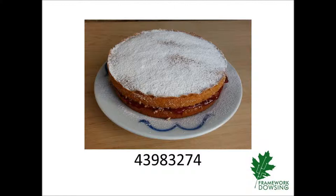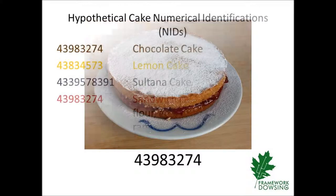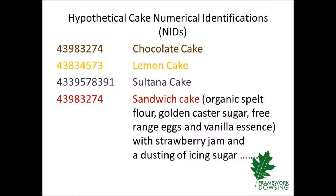To us, it can represent a specific type of Victoria sandwich cake which contains strawberry jam and is dusted with icing sugar. We could then have a series of numbers which represent different sorts of cakes. You could say that there are numerous variations — for example, of a chocolate cake — and you would be right. But we're just using this idea to create an understanding of the use of numerical identifications, otherwise known as rates, by radionic practitioners.